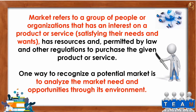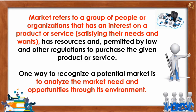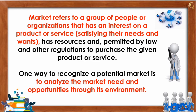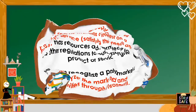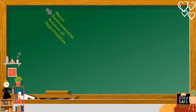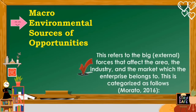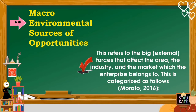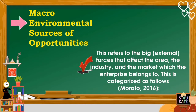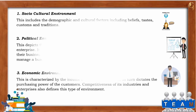One way to recognize a potential market is to analyze the market need and opportunities through its environment. Let's know more about macro environmental sources of opportunities. This refers to the big or external forces that affect the area, the industry, and the market which the enterprise belongs to. This is categorized as follows, according to Morato, 2016.